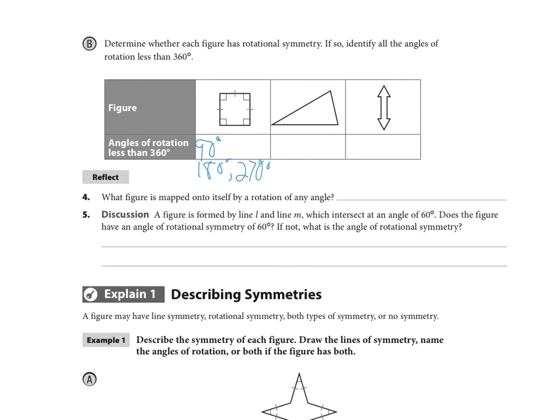For the second figure, there is really no way to get that triangle back onto itself unless we turned it all the way around onto itself. So we here would say that this had no rotational symmetry. And then the last one, this arrow, we would have to turn it 180 degrees to get it to rotate one point to the other there. So that's the only angle of rotation.